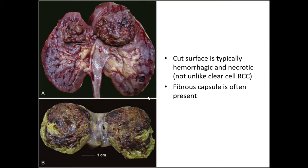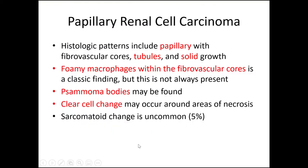Grossly, papillary RCC is not that different from clear cell RCC — they're generally large, hemorrhagic, necrotic, and have areas of yellow discoloration. There are different histologic growth patterns: not always clearly papillary. As we saw in our case, there were areas of solid growth, tubules, and tubulocystic appearance. The characteristic finding is foamy macrophages within the fibrovascular cores of the papillae. You may also see psammoma bodies and clear cell change. Sarcomatoid change is relatively uncommon in papillary and more typically seen in clear cell RCC.